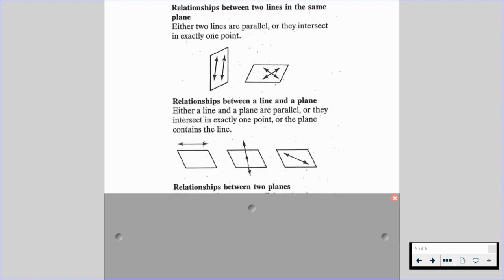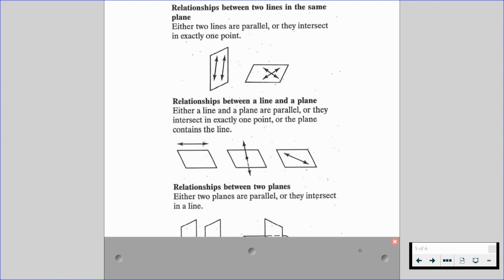And finally, we have relationships between two planes. Either two planes are parallel or they intersect in a line. Those are the only two types of relationships that are going to be between two planes. Either they're going to be parallel or they're going to intersect. And when they intersect, they form a line.